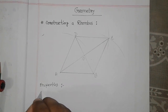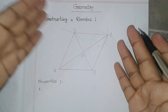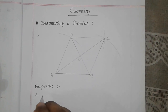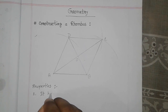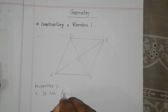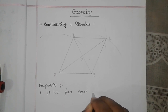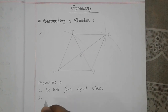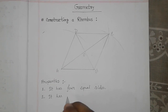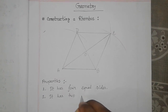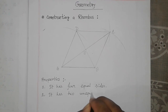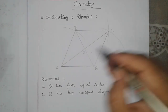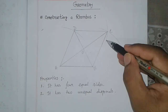The first property: it looks like a parallelogram, and it has four sides with all sides equal. So we can write: the Rhombus has four equal sides. Number two: A to C and B to D — these lines are called diagonals inside the Rhombus.